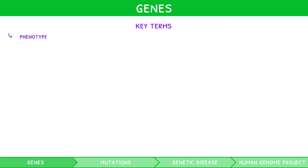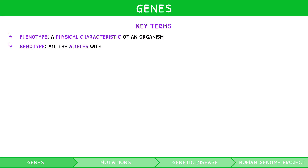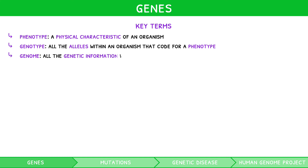Phenotype: a physical characteristic of an organism. Genotype: all the alleles within an organism that code for a phenotype. Genome: all the genetic information within a single organism.